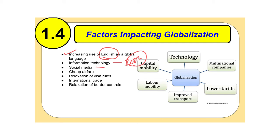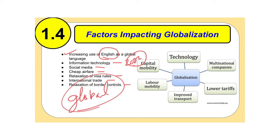Social media — Facebook, Twitter, and all these different platforms — allows us to be instantly connected with people throughout the world. Cheap airfare now allows us to fly very cheaply from one place to another. Countries have relaxed visa rules, international trade has increased, and there's been relaxation of border controls. This whole idea is leading to a global movement where people see themselves as tied to this planet and want to learn more about each other.